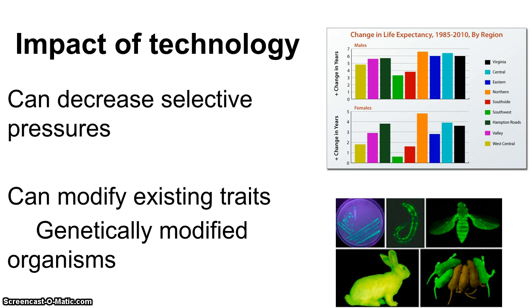So what has technology done to the population? Because of technology, we can decrease selective pressure. Life expectancy has gone up, and infant mortality rate — the rate at which infants die — has decreased a lot from ancient times. We can also modify existing traits and create genetically modified organisms.